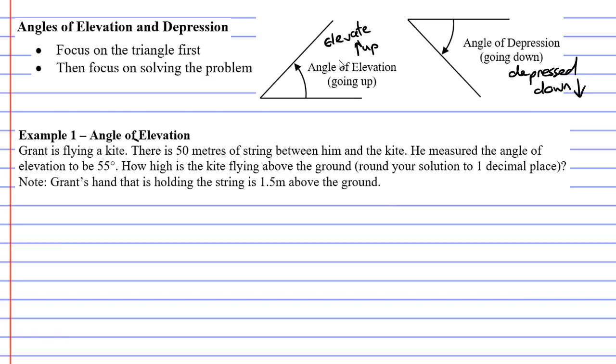For example one, which is going to be an angle of elevation: we have a man named Grant and he's flying a kite. There is 50 meters of string between him and the kite. He measured the angle of elevation to be 55 degrees, and they want you to calculate the height of the kite above the ground. You'll notice a couple of dot points that help you solve these.